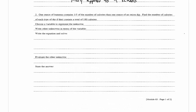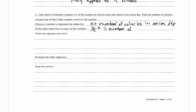In number two it says: one ounce of hummus contains one fifth of the number of calories as one ounce of onion dip. Find the number of calories of each type of dip if they contain a total of 180 calories. We choose a variable: x is equal to the number of calories in onion dip. Then the other unknown is one fifth x, which equals the number of calories in hummus.